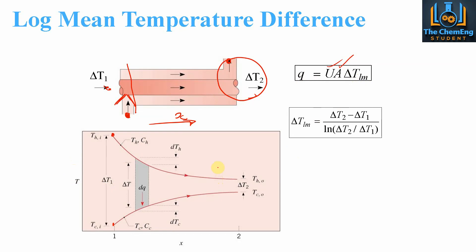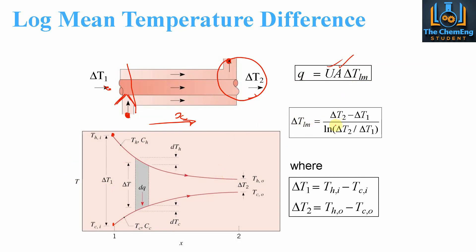The log mean temperature is equal to delta T2, which is the difference in temperature at the outlet — that's the hot outlet temperature THo minus the cold outlet temperature. Delta T1 is the hot inlet temperature minus the cold inlet temperature. The equation is delta T2 minus delta T1 divided by the natural log of the ratio of delta T2 over delta T1. That's the log mean temperature difference formula, where delta T1 and delta T2 are the inlet and outlet temperature differences respectively.